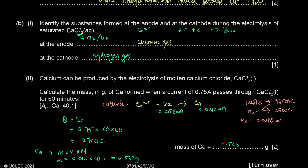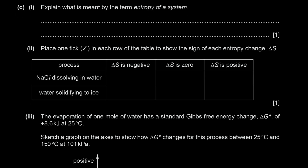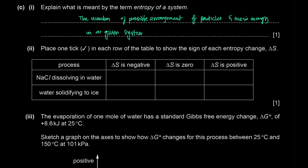Define entropy of a system. Entropy is the number of possible arrangements of particles and their energy in a given system. This is more accurate than simply saying 'measure of disorder.'